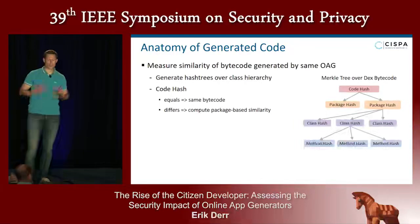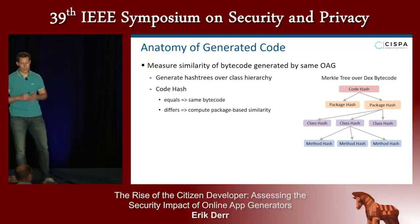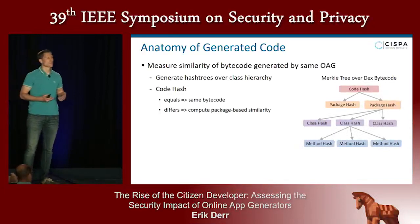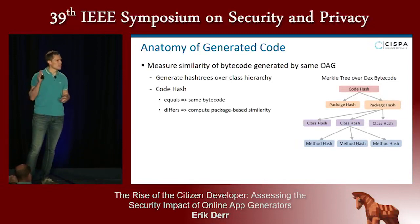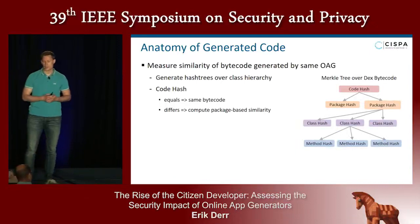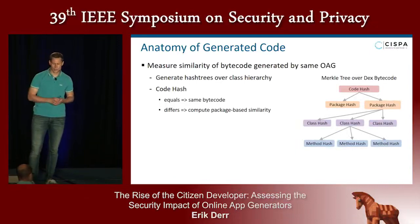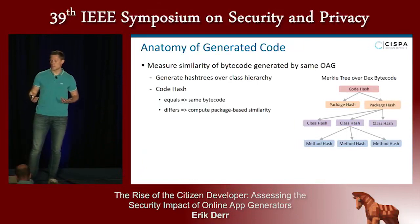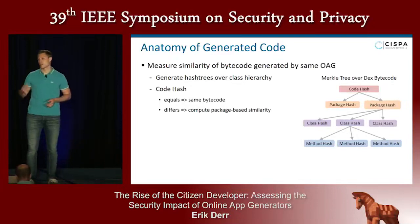The result is a Merkle tree with three layers: a package layer, class layer, and method layer. Android apps are written in Java or Kotlin, organized in hierarchical namespaces that are preserved in the binaries. We exploit that fact to extract those namespaces and create the Merkle tree. Comparing the root hash of different files tells us whether bytecode is exactly the same, and if it differs, we compute a package-based similarity to measure the extent of code reuse.